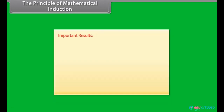Important results. 1 + 2 + 3 + ... + n = n(n+1)/2.